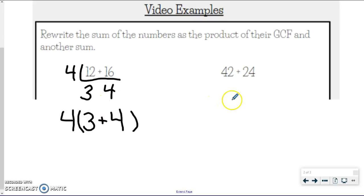Let's try one more. So if I look at 42 and 24, again, I'm rewriting the sum using the product, or by doing a product of the GCF and another sum. So I got to start by finding the GCF. Well, 2 definitely goes into both of these because they end in even numbers. But I'm going to try and think if I can find something bigger. I think 6 works. So 6 goes into 42 seven times. And 6 goes into 24 four times. So I just divided both my numbers by the GCF. And when I look at 7 and 4, there are no more common factors between them other than 1.